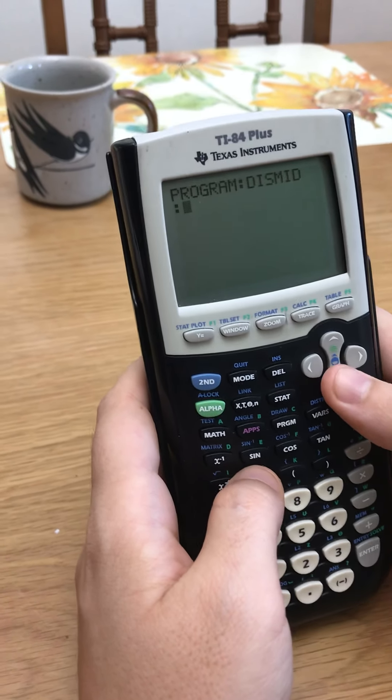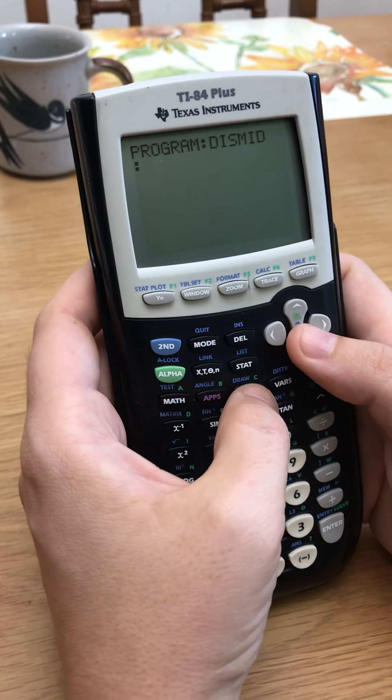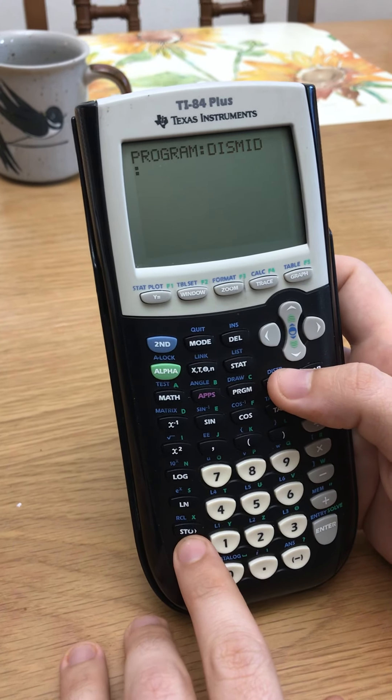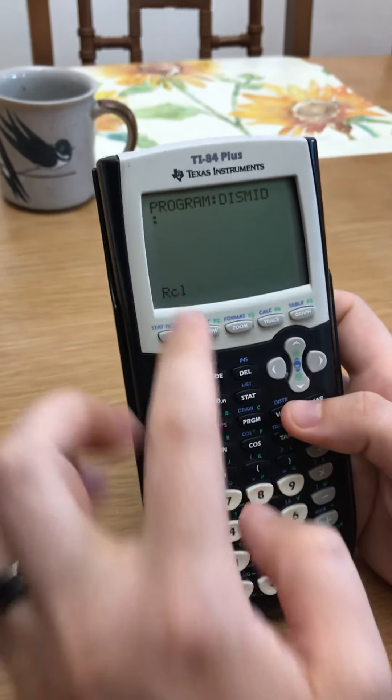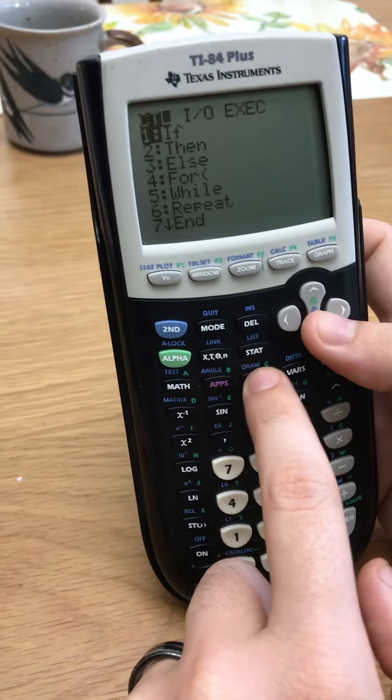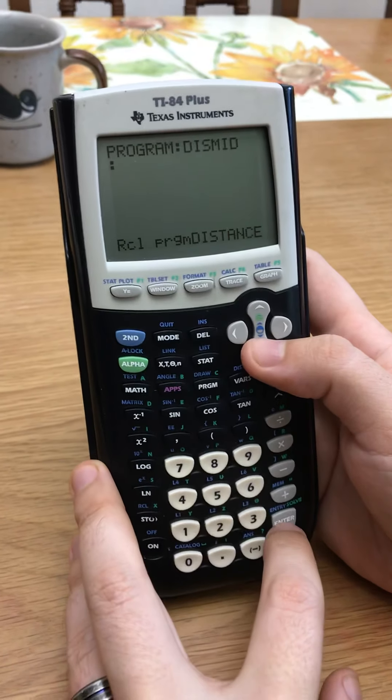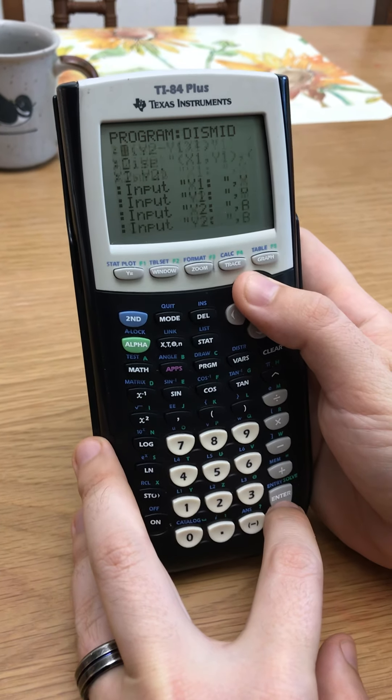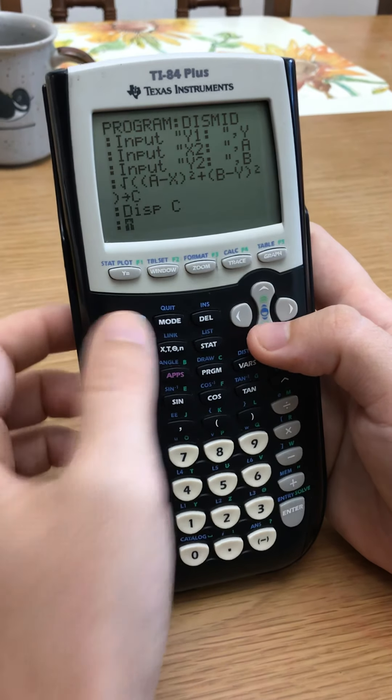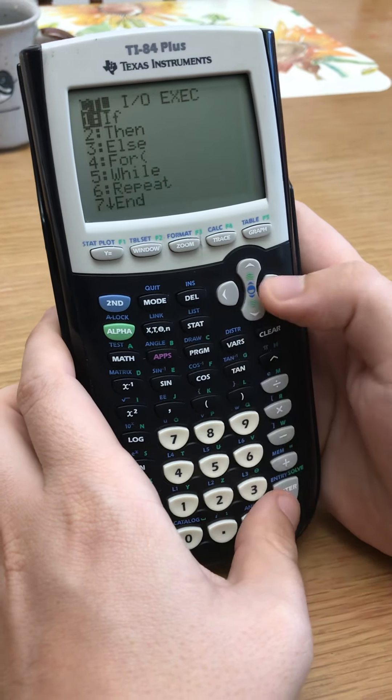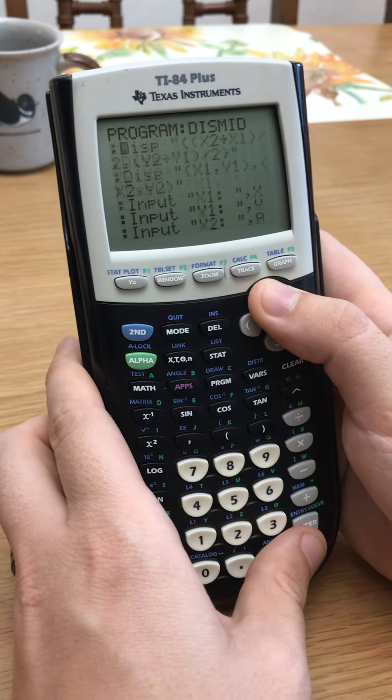So I want to put both the distance and the midpoint formulas in here, but I don't want to spend all that time doing all those program things again, right? So here's what I do. Where it says store, above it, it says R-C-L. That means recall. So it's sort of like copy paste. So recall, and I want to recall, well, it's asking what to recall. I want to recall a program. So I want to recall the distance formula. Boom, there's the distance formula. I just copied and pasted the distance formula into this thing here. And then all I have to do is do it one more time. So second, recall, program. I want to put the midpoint formula in there, enter. And there's the midpoint formula. And now I've got the distance and the midpoint formula all in one program.